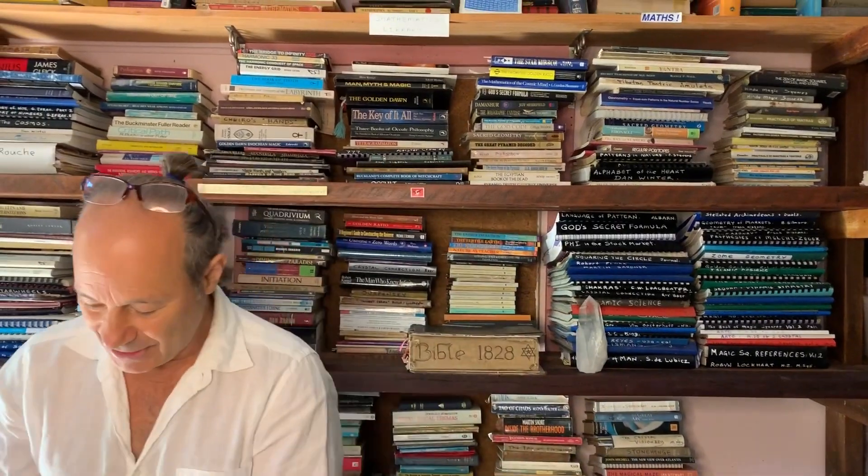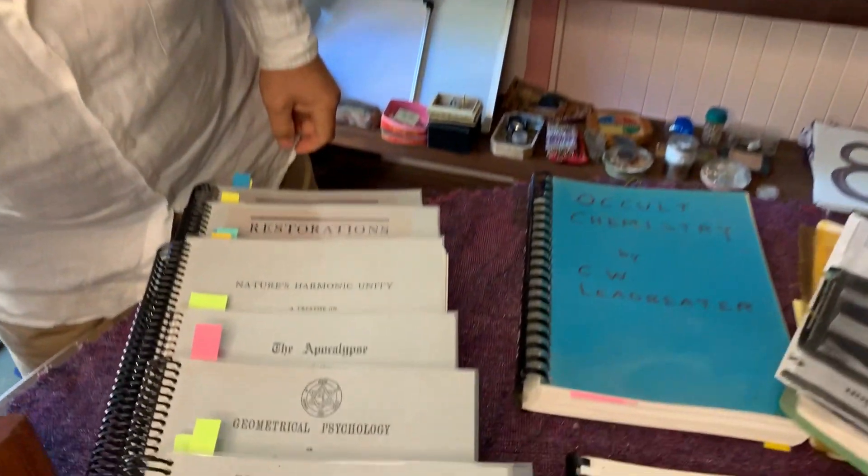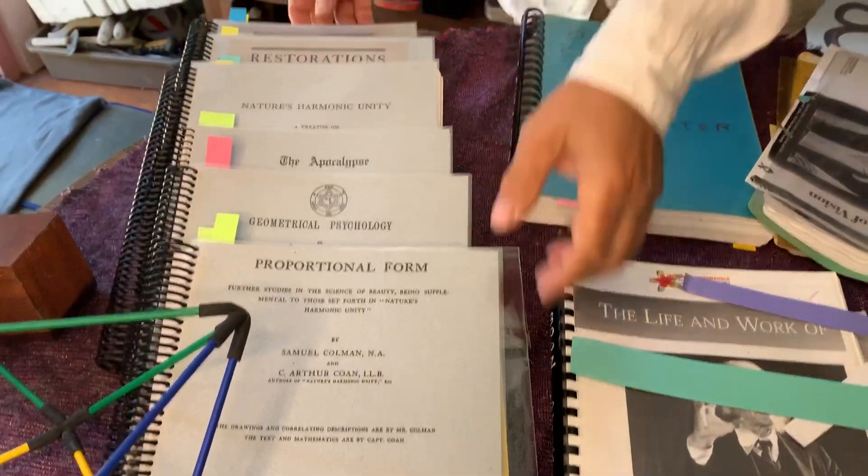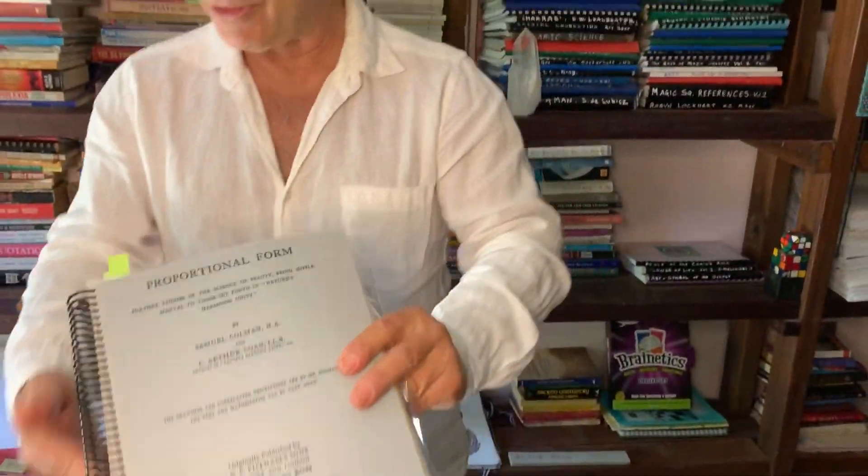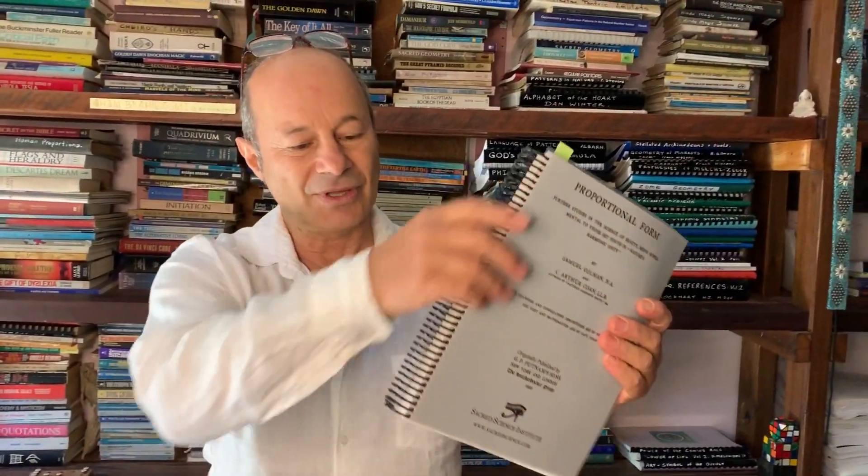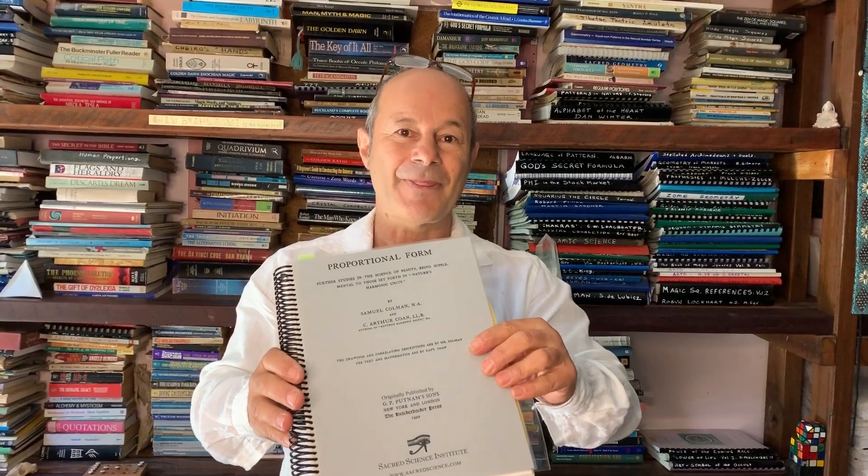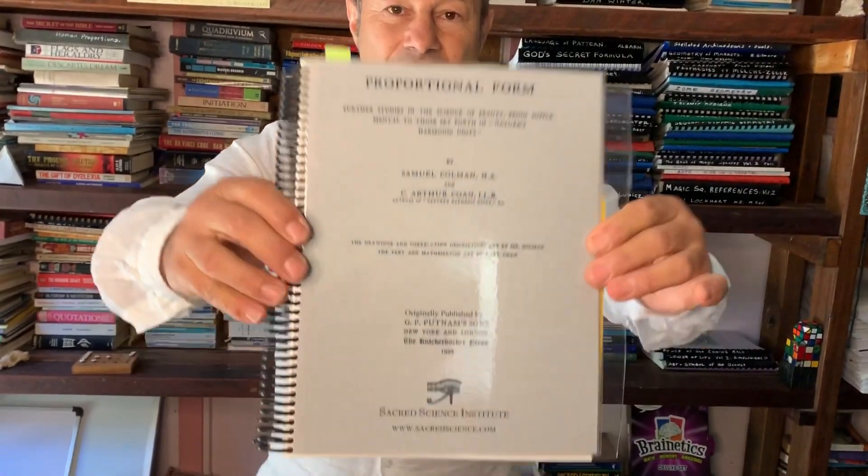I'm just going to check these six books here. I wanted to start with proportional form. Now these six books here, they've all got the same spiral. They were given to me by Sacred Science Institute in America. So I gave them my four books on magic squares about 15 years ago. And every time they sold the books, the royalties I got were given, he actually prints all the rare books. So this one called Proportional Form,